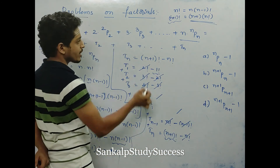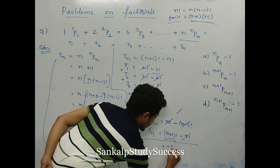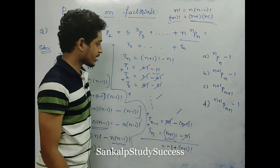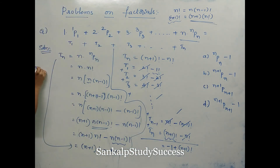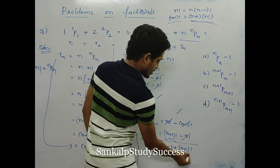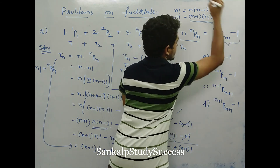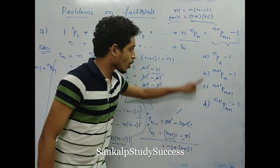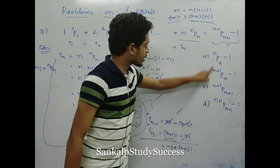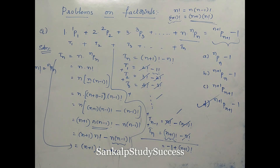So the entire summation equals (n+1) factorial minus 1. Using the first property, n factorial equals nPn, so (n+1) factorial equals (n+1)P(n+1). Therefore the answer is (n+1)P(n+1) minus 1. This is option D. This is a very logical question — the key is to first modify and manipulate each term into the format (n+1)! minus n!.